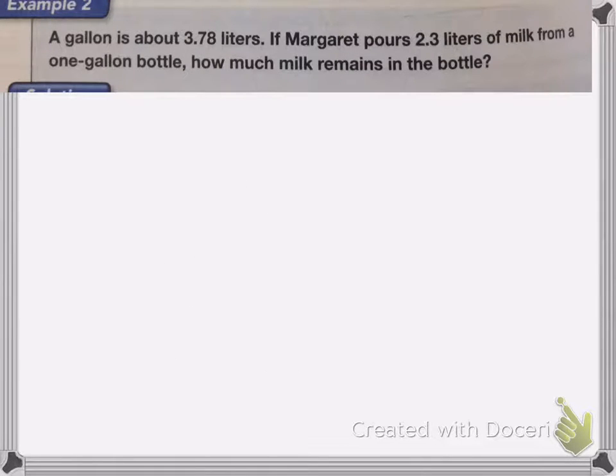Now in this one we have a gallon is about 3.78 liters. If Margaret pours 2.3 liters of milk from a one-gallon bottle, how much milk remains in the bottle?